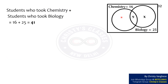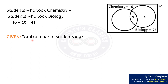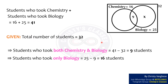Students who took chemistry plus students who took biology equals 16 plus 25, that is 41. It is also given that the total number of students equals 32. This implies that students who took both chemistry and biology equals 41 minus 32, which equals 9 students. This implies that students who took only biology equals 25 minus 9, that is 16 students.